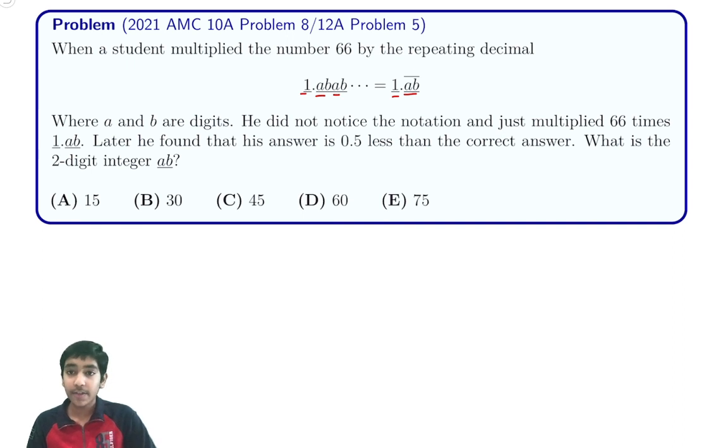But what he did not notice is the notation, and just multiply 66 times 1.AB. In this answer, we found that 0.5 less than the correct answer, so this is very important. What is the two-digit integer AB?